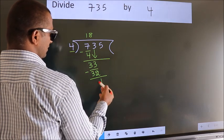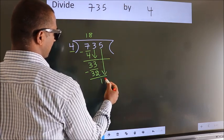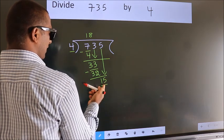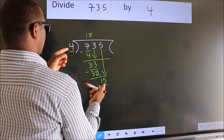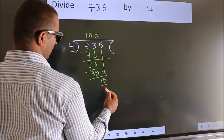After this, bring down the beside number. So, 5 down. So, 15. A number close to 15 in 4 table is 4 3s 12.